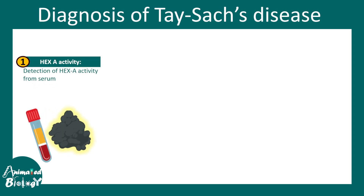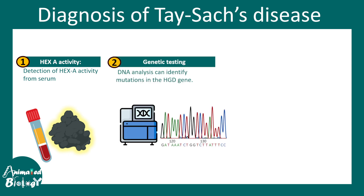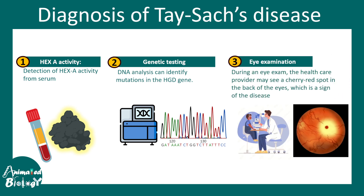Tay-Sachs disease can be diagnosed using a blood test where hex A activity is examined from the serum sample using ELISA. There could also be genetic testing, which is more expensive but high-throughput and reliable. An eye examination is also used — the healthcare professional looks for a cherry red spot in the macula, which is significantly diagnostic of Tay-Sachs disease.